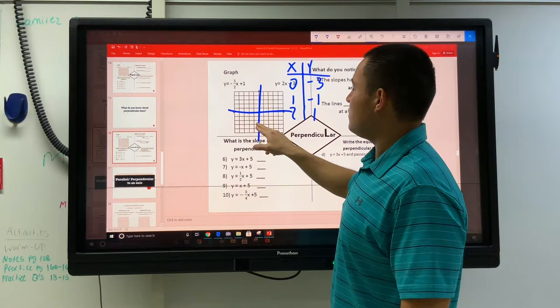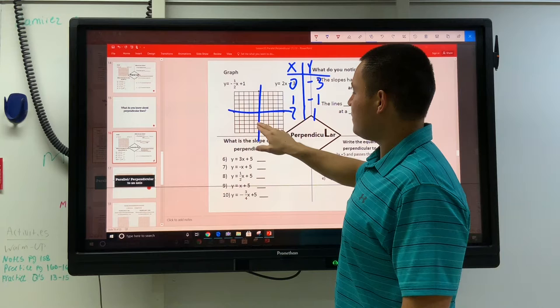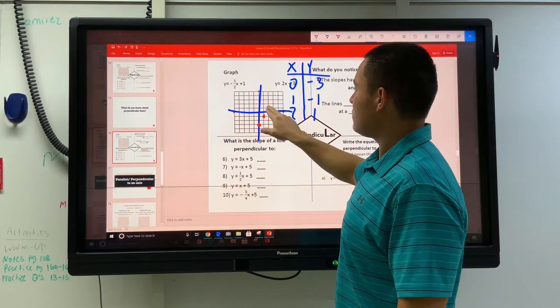0, negative 3. I'll use a different color. 0, negative 3, 1, negative 1, 2, 1. That's 2x minus 3.